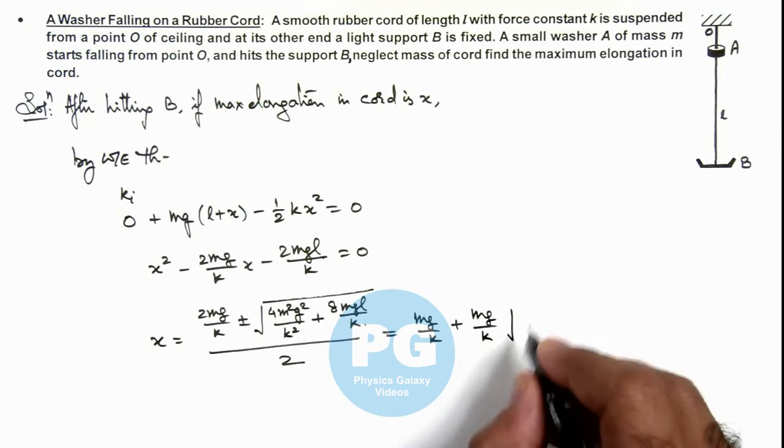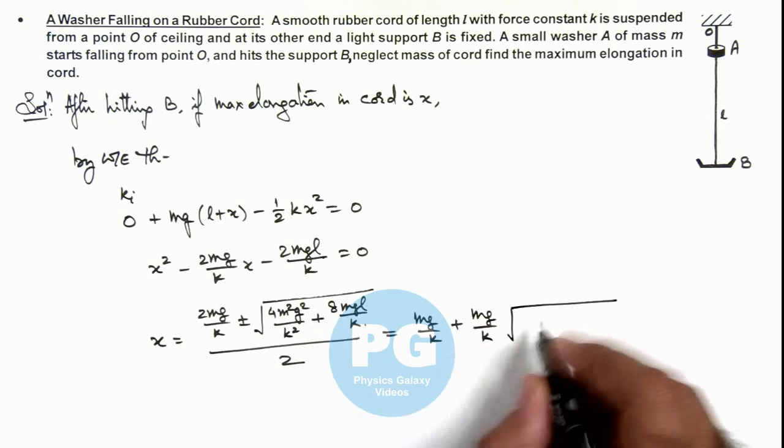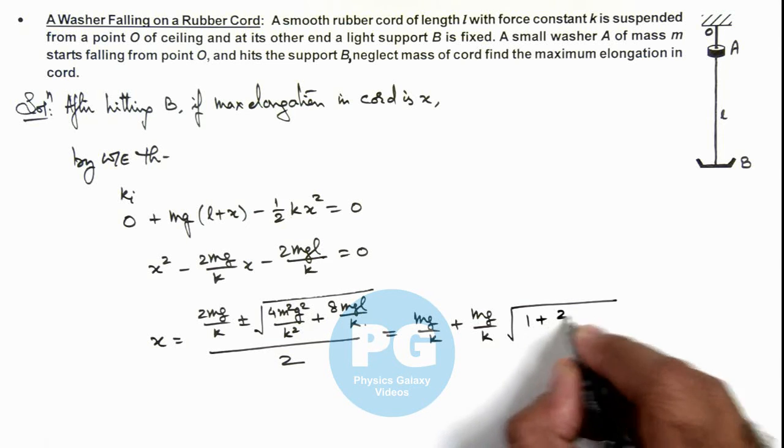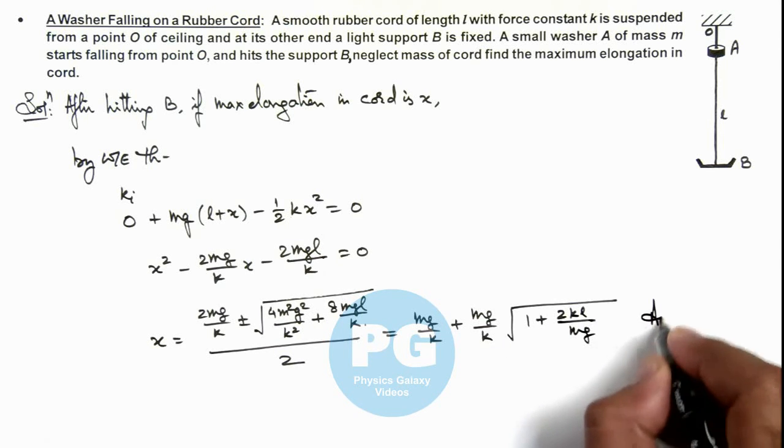So this will be root of, this 2 can also be cancelled by 4 so this will be 1 plus 2kl/mg, and this will be the final result of this problem.